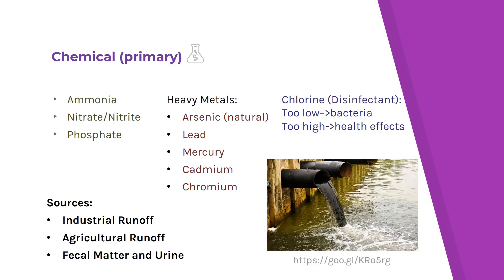The first primary contaminants are chemical contaminants: ammonia, nitrate, nitrite, phosphate, and heavy metals such as arsenic, lead, mercury, cadmium, and chromium. The heavy metals mostly come from industrial runoff, whereas ammonia, nitrate, nitrite, and phosphate are mainly from agricultural runoff. However, arsenic can also occur naturally, so even if an area is not near any industrial activity, we should still test for arsenic.